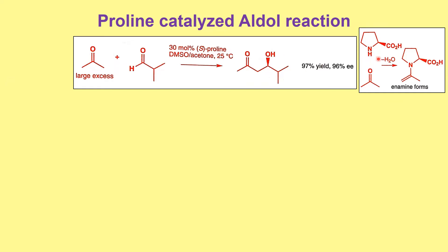In the 1970s it was found that proline has the ability to catalyze reactions with high enantiomeric excess. By the year 2000 and afterwards, there have been thousands of papers reporting the efficiency of proline in catalyzing various transformations. We will see one such example here.